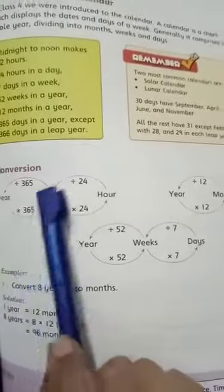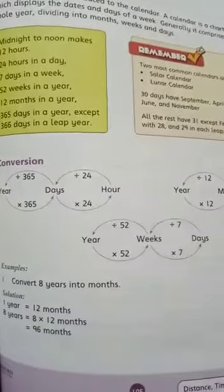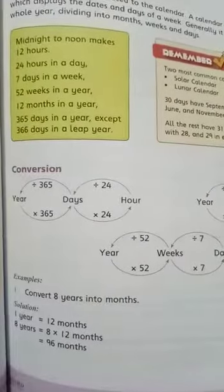I will tell you that in one year, we have 365 days. If we convert years into days, we multiply by 365. But if we convert days into years, we divide by 365.